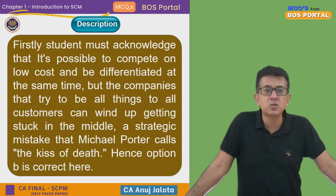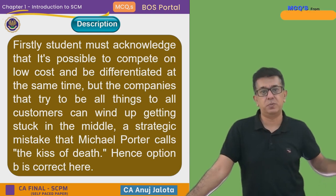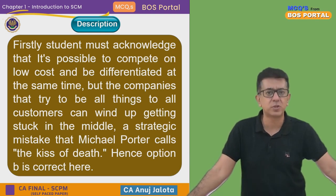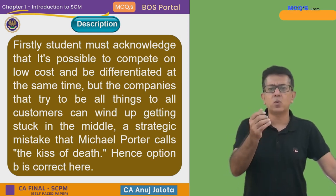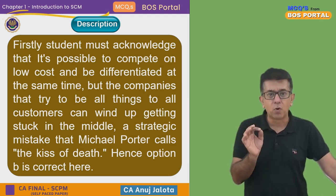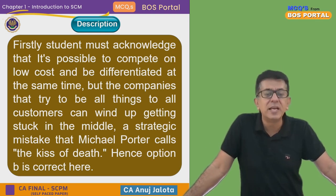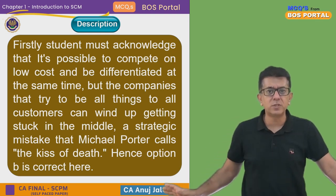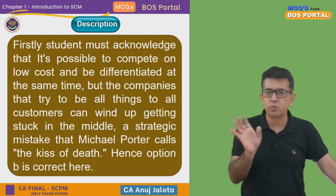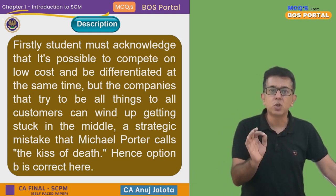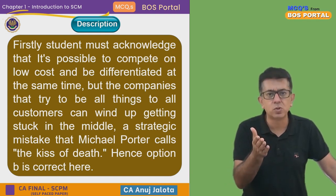The second option is cost leadership — you try to offer products at the least possible price. You don't say much about your product quality; it's okay, but you want to offer products at the cheapest price. For example, IndiGo — they don't say their planes are great or the food is great; they make you reach on time and their ticket pricing is very low. Similarly, Air Arabia — these are economy airlines.